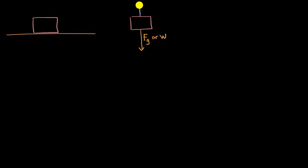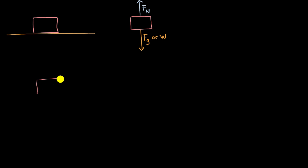So there must be another force that is netting out against the force of gravity. That would be the force of the table pushing on the block. This force of pushing in a direction that is perpendicular to the surface of an object is known as normal force, and its magnitude you could denote as capital F sub N. Let's do another example.